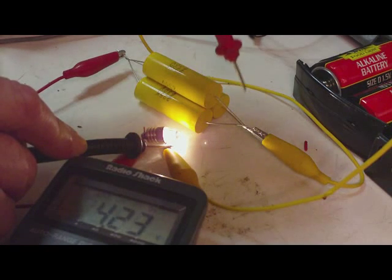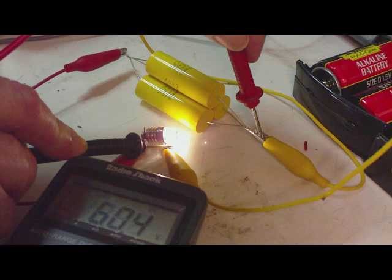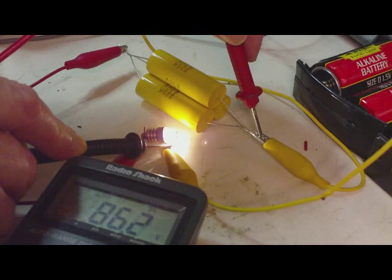And now I'm going to measure the AC voltage across the variac. And that is 86.2 volts.